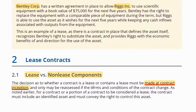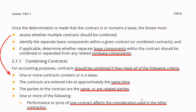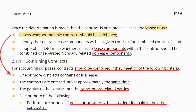For a contract or a portion of a contract to be considered a lease, it must include an identified asset and must convey the right to control this asset. Any component that includes an identified asset and conveys the right to control this asset is considered a lease component. Once you determine whether you have lease or non-lease components, as a lessee, you might assess whether multiple contracts should be combined and identify the separate lease components within a given contract.